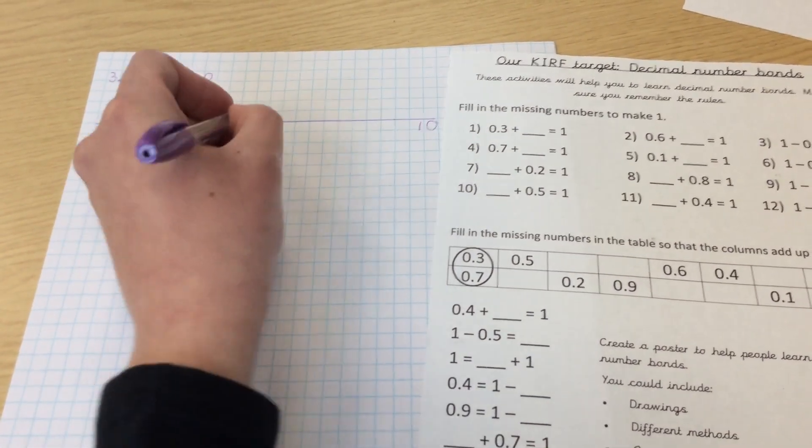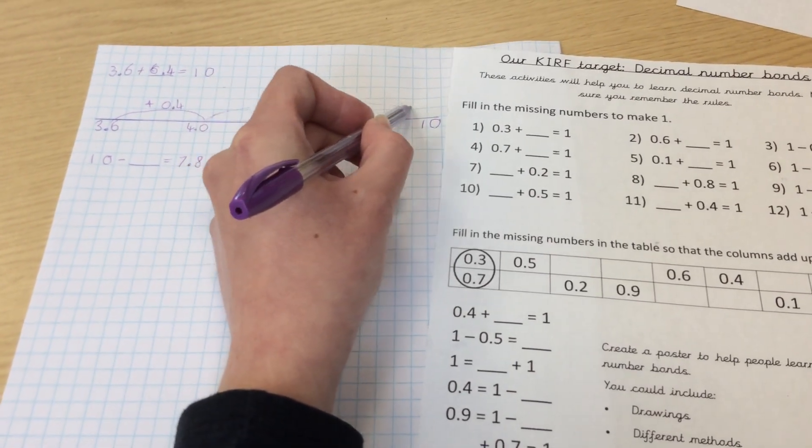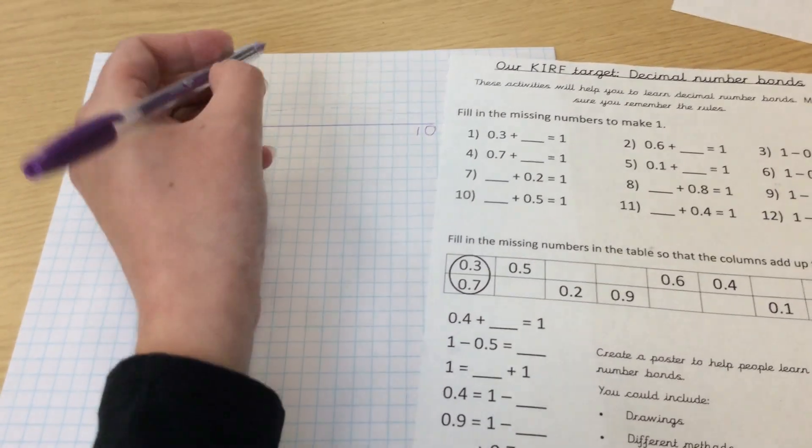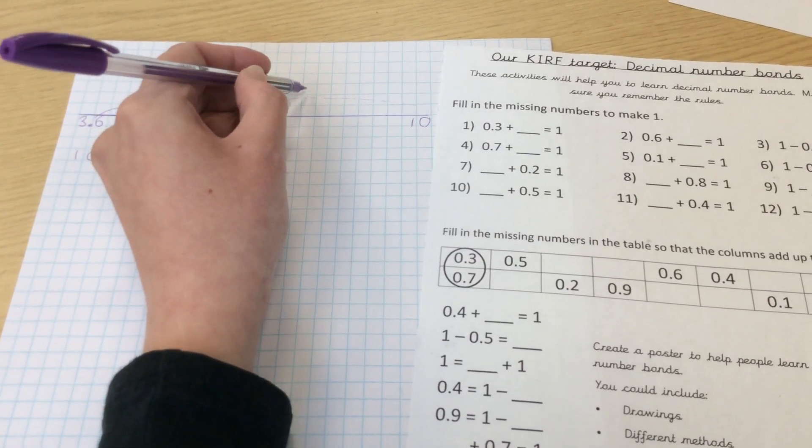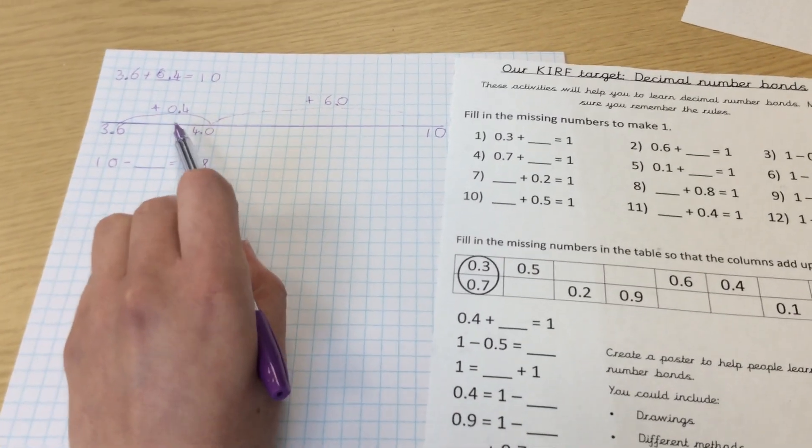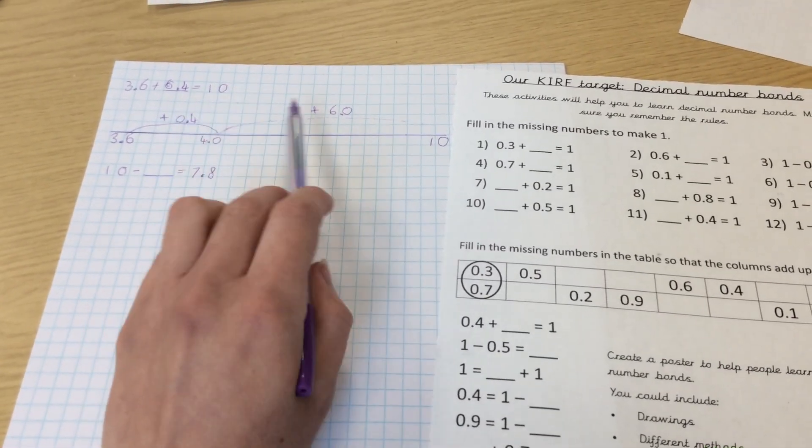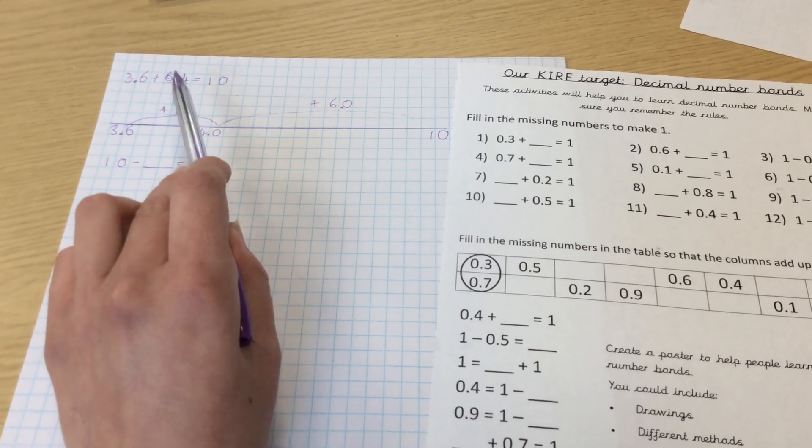And then to get from 4 to 10, because I've got two whole numbers now, to get from 4 to 10 I'm going to do a really big jump all the way, and that's going to be plus 6.0.